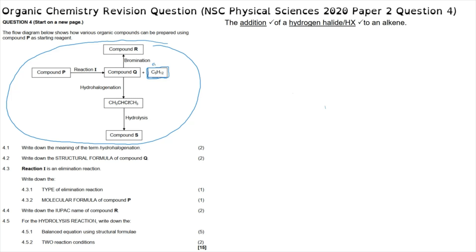One of the products of this reaction is an alkane C5H12. We know that it is an alkane because it has the formula CnH2n+2, which suggests that reaction one might be a cracking reaction that produces an alkane along with an alkene. This is further supported by the fact that compound Q can go through a bromination reaction as well as a hydrohalogenation, meaning compound Q must be unsaturated — supporting the idea that it is an alkene.